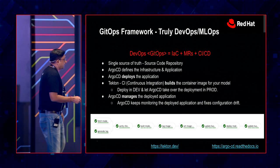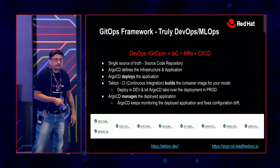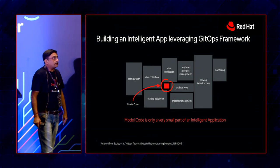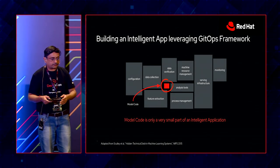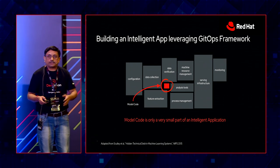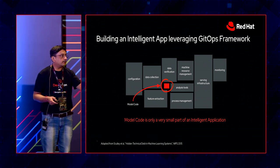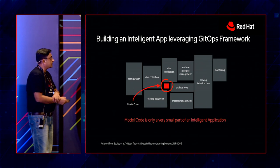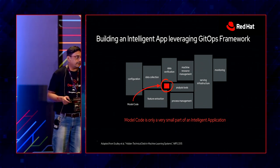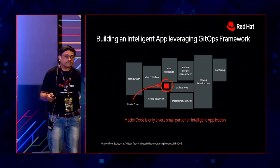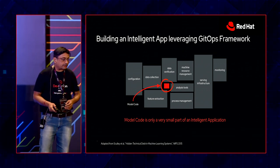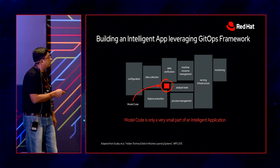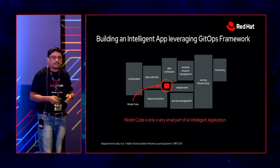There are some links provided if you want to read about Argo CD and Tekton. Moving to the MLOps perspective — how many of you have actually worked on machine learning tasks in your organization? Model code is just a very small portion of making an application intelligent. It's not just the model part — it's the whole ecosystem: configuration, data collection, feature extraction, process management, infrastructure serving, and monitoring. We saw this morning when demonstrating OpenShift AI — model serving inference as a separate section, and the pipeline with Tekton.